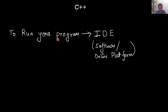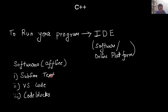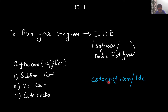To run your C++ program, we need something called an IDE. This IDE could be a software or an online platform — it is basically a place where you can write your C++ code and see it in execution. Some famous offline IDEs are Sublime Text, VS Code, and Codeblocks. The only issue with offline IDEs is that you need to set them up before using them. Online IDEs are very easy to use. The IDE I'm going to use in this series is an online IDE, and the link is simply codeshift.com/IDE — write this URL in your browser and you can access it.